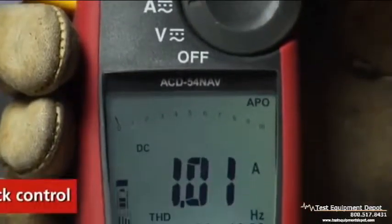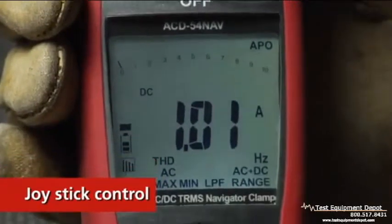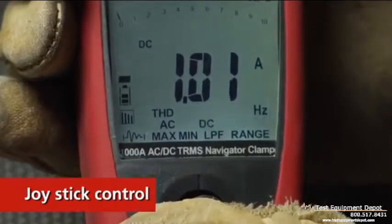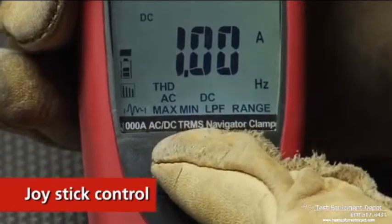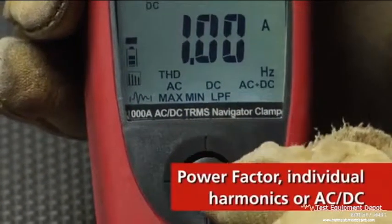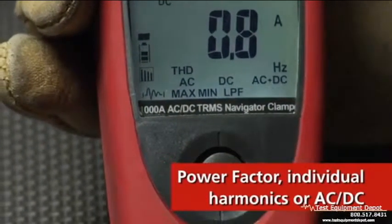Amprobe's Navigator Clamp Meters feature single-handed selection with a joystick control that makes it easy to choose between multiple measurements like Power Factor, Individual Harmonics, or AC-DC.